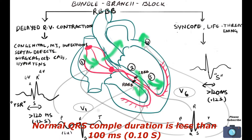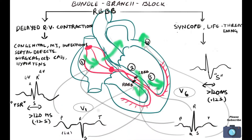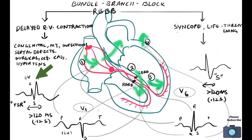A simple way to understand bundle branch block is that the QRS complex of V1 and V6 exceeding more than 0.12 seconds is the indication of bundle branch block. In right bundle branch block, conduction towards the right side becomes delayed. We can see a slurred RSR' pattern — a normal R and an extra R — in the ECG of V1. This R indicates the position 2 of electromotive forces, essentially indicating ventricular depolarization.